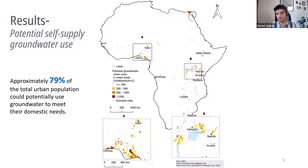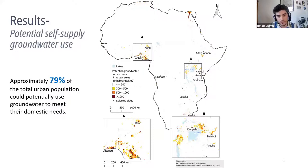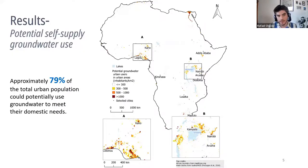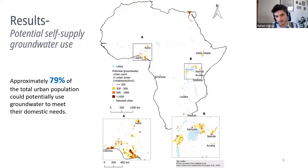Jumping into the big results: for the potential self-supplied groundwater use, we estimate that considering only hydrogeological conditions, approximately 79% of total urban population could potentially use groundwater to meet their domestic needs. Here is a map of the distribution of that population — it's urban population we're looking at — concentrated near Nigeria, Uganda, Tanzania, and Kenya.